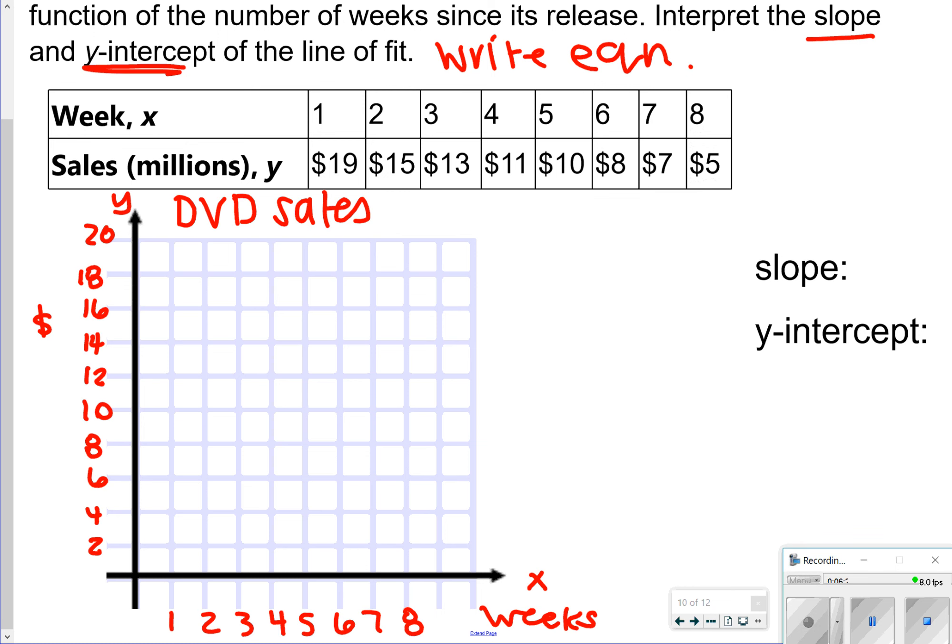All right. So the first thing you want to do is label your graph. Your weeks are on the x-axis and your DVD sales are on the y. I labeled my weeks up by ones and my DVD sales up by twos. The next thing we're going to do is plot the points. So here are all my points. And now I would like to make a line of fit. Remember you want the same amount on the top of the line as on the bottom of the line. So my line of fit, I'm going to do that in a different color. What I did here is I tried to hit as many points as I could, but still have the same number of points above the line as below the line. I did have two above the line and then three below the line, but that's okay.